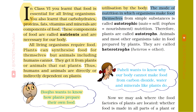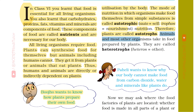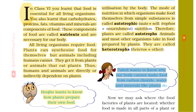The mode of nutrition in which organisms make food themselves from simple substances is called autotrophic nutrition. Auto means self, trophos means nourishment. Therefore, plants are called autotrophs. Animals and most other organisms take in food prepared by plants. They are called heterotrophs. Heteros means other. Paheli wants to know why our body cannot make food from carbon dioxide, water and minerals like plants do.